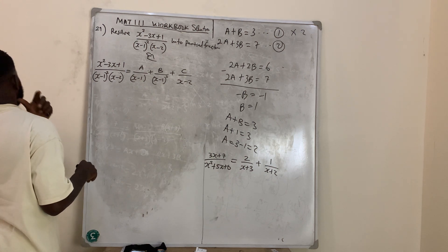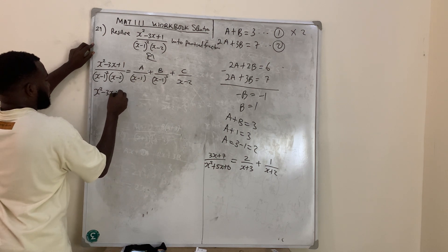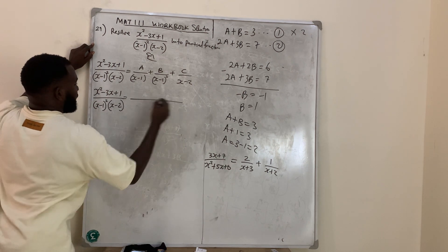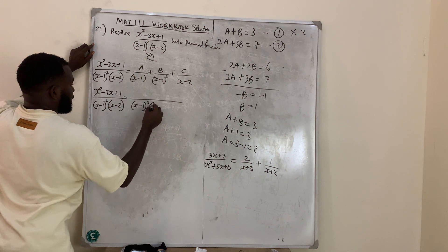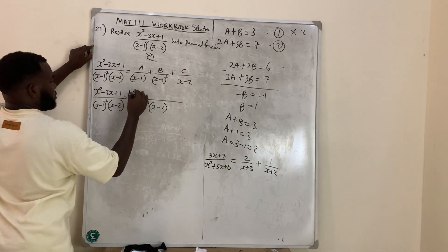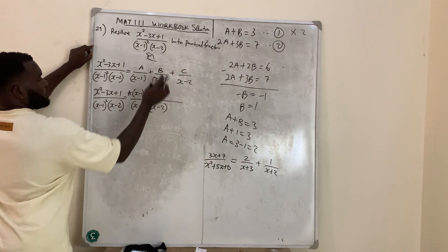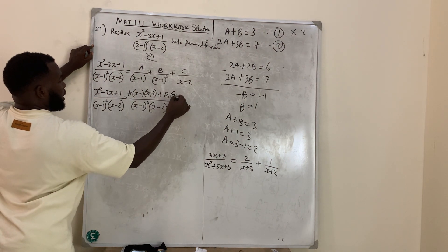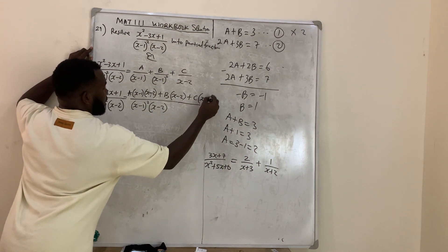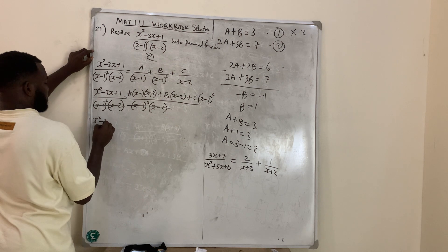You can watch my video on partial fractions to understand how this is formed. So: (x² − 3x + 1) over [(x−1)²(x−2)] equals, with LCM (x−1)²(x−2). When this divides, I get A(x−1)(x−2) plus B(x−2) plus C(x−1)². The denominator cancels, leaving x² − 3x + 1.